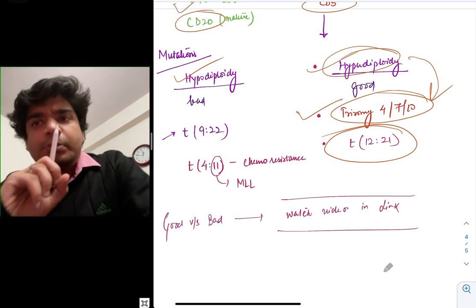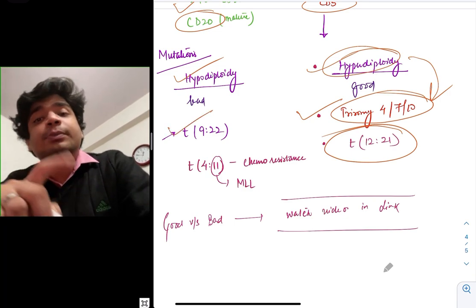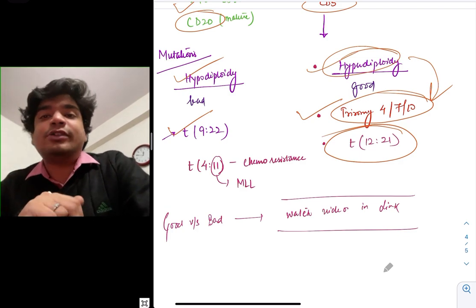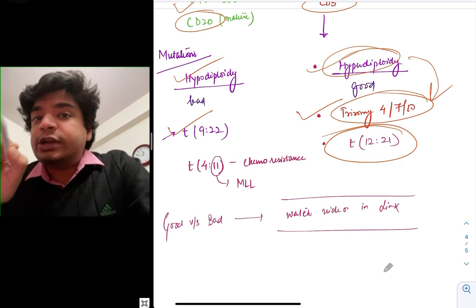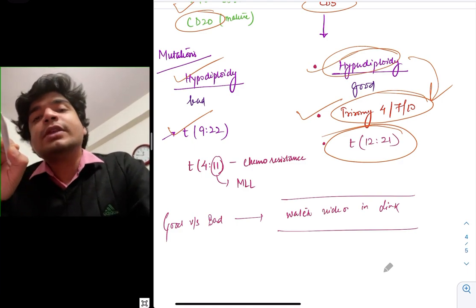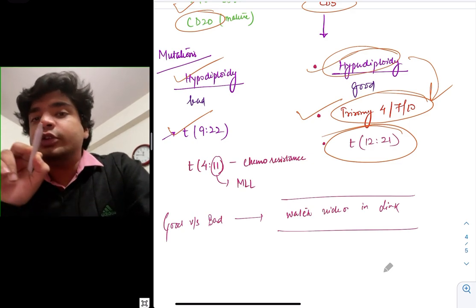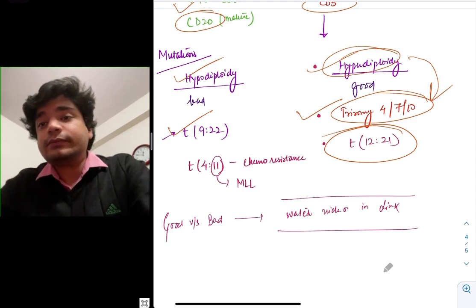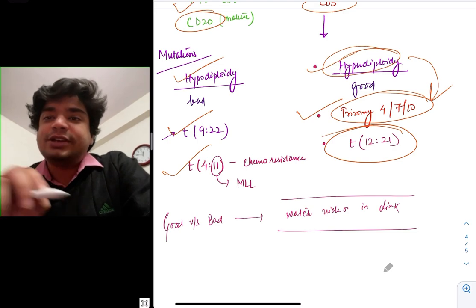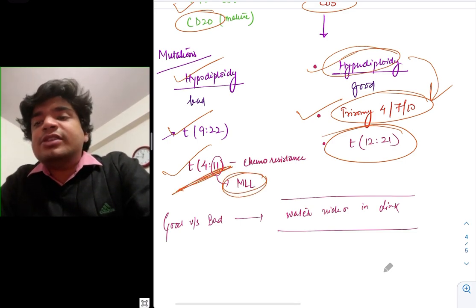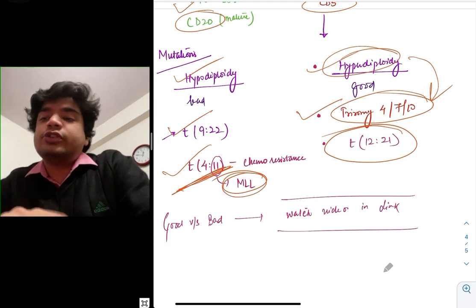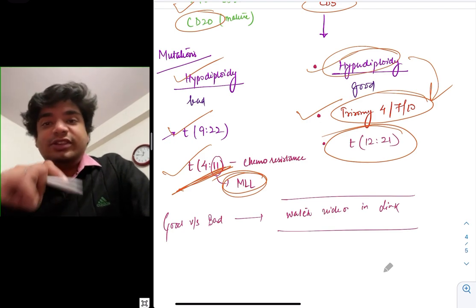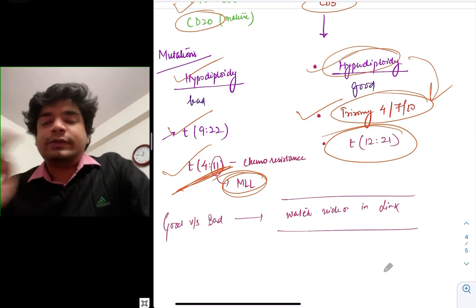Bad prognostic factors: hypodiploidy (chromosome number reduced), translocation (9;22) — BCR-ABL — which results in formation of a different type of protein than the one made in CML (leave your answer in the comments), and translocation (4;11) which is MLL gene rearrangement — also causes bad prognosis. A separate video on good versus bad prognosis is available in the description or pinned comment.